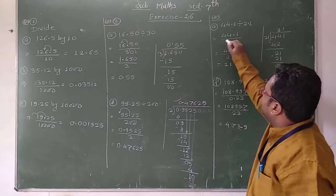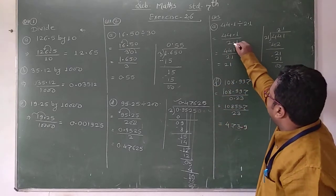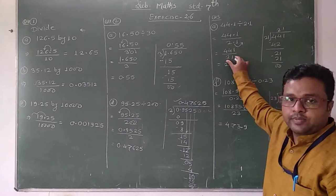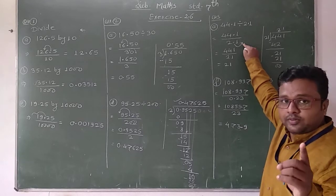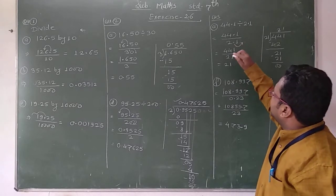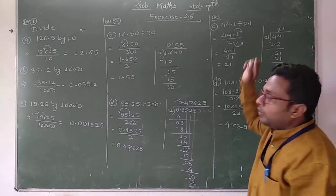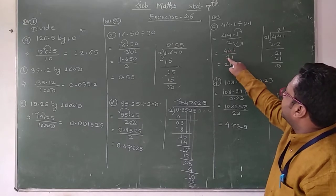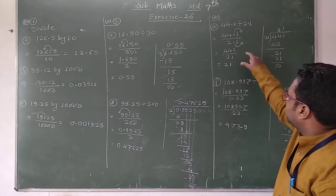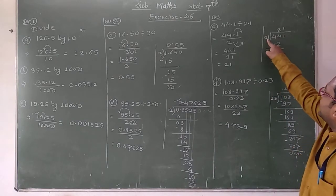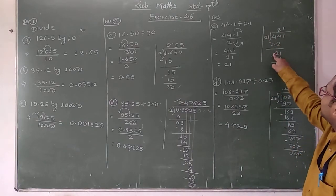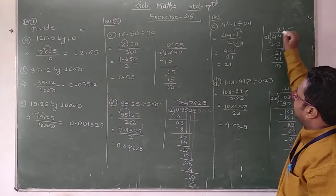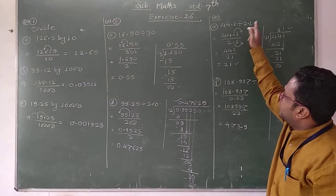First we write in this form: 44.1 divided by 2.1. While doing the division, first we have to write the divisor as a whole number. Therefore we shift the decimal point in the denominator 1 digit to the right — then 2.1 becomes 21. We shift 1 digit in the numerator also. Therefore the number becomes 441 divided by 21. Now: 21 twos are 42, remainder 2; take next digit 1, giving 21; 21 ones are 21. The answer is 21.